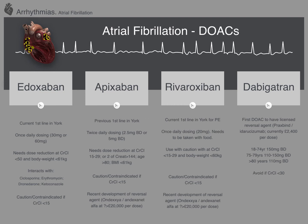They've all got slightly different issues and guidelines in terms of how we use them. Edoxaban is once-daily dosing compared to Apixaban which is twice-daily dosing — that can be an advantage particularly in the elderly who may have a high tablet burden or do better remembering a once-daily tablet. Rivaroxaban is also once-daily dosing — we actually use it as first-line for pulmonary embolism but it's uncommon to use it for atrial fibrillation alone. One thing with Rivaroxaban is that it needs to be taken alongside food, and if people have poor oral intake in an elderly population, that can sometimes be an issue.